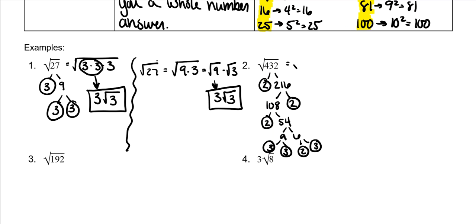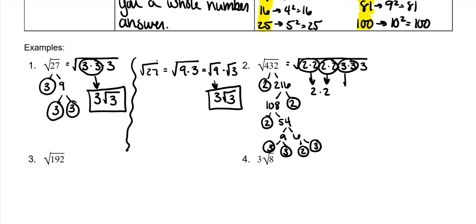Which means that the square root of 432 is the same thing as: there are 1, 2, 3, 4 twos, and 1, 2, 3 threes. The pairs come out and the one left stays in. 2 times 2 is 4, times 3 is 12 — so the answer is 12 square roots of 3.